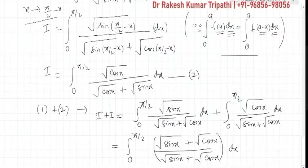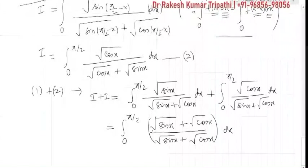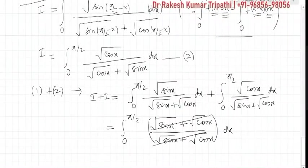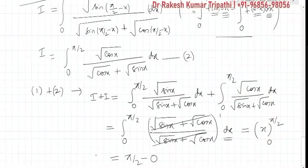Now √sin x + √cos x lying in numerator and denominator, so they can be cancelled. Therefore, this is integral of 1 with respect to x is x, and limit 0 to π/2 is equal to π/2 - 0. And left-hand side is 2I, so 2I is equal to π/2.